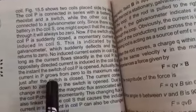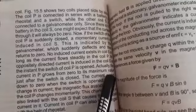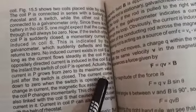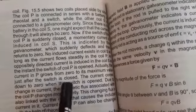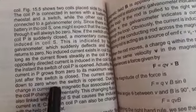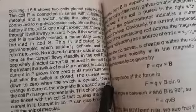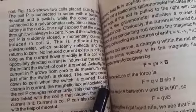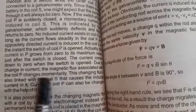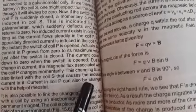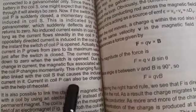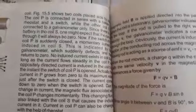The current in P grows from zero to its maximum value just after the switch is closed. The current comes down to zero when the switch is opened. Due to change in current, the magnetic flux associated with the coil P changes momentarily. This changing flux is also linked with the coil S, that causes the induced current. Current in coil P can also be changed with the help of rheostat.